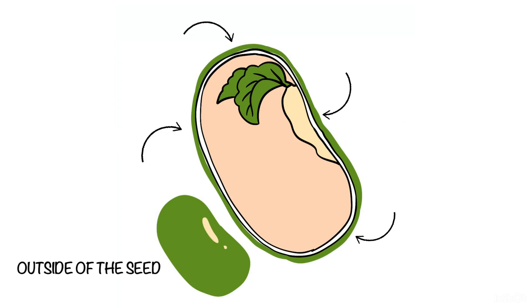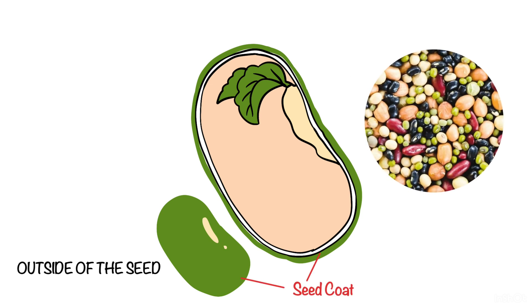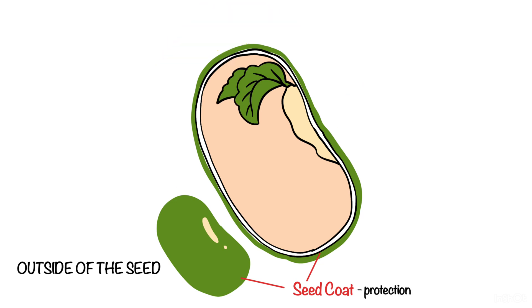Let's start with the outermost layer of the seed called the seed coat, which can be a variety of different colors. The main function of the seed coat is to protect the developing baby plant, or the embryo.